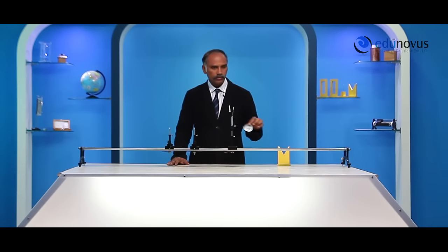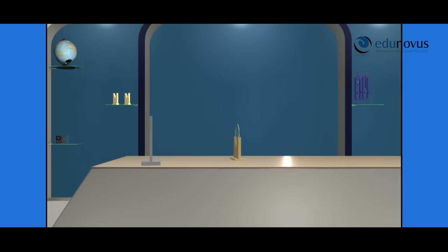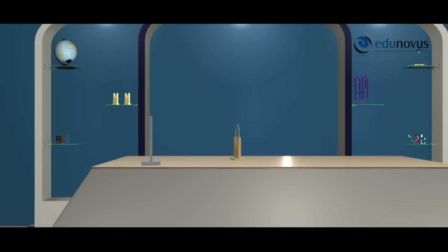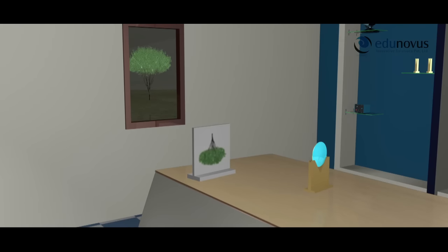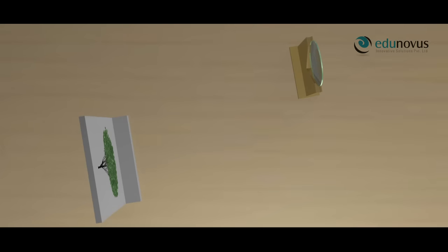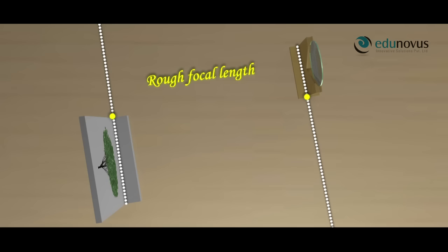First, we need to find the rough focal length of the given concave mirror. Take the concave mirror and place it in the mirror holder. Place the mirror towards a distant tree and obtain its inverted image on a screen. Move the mirror forward and backward until you get a sharp image. With the help of a scale, measure the distance between the mirror holder and the screen — this is the rough focal length. Here, it is 15 centimeters.